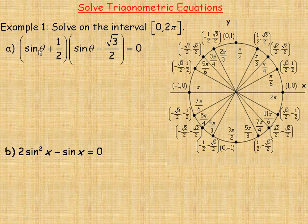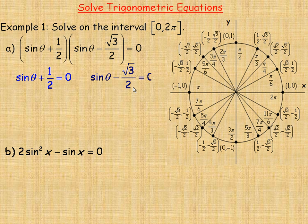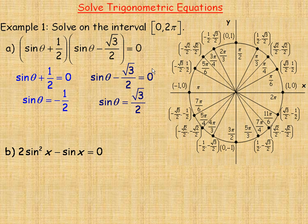In example A, we're given (sine θ + 1/2)(sine θ − root 3 over 2) = 0. There's an implied multiplication here. The only way this quantity multiplied by this quantity equals 0 is if either sine θ + 1/2 = 0 or sine θ − root 3 over 2 = 0. So we rearrange: sine θ = negative 1/2, and sine θ = root 3 over 2.